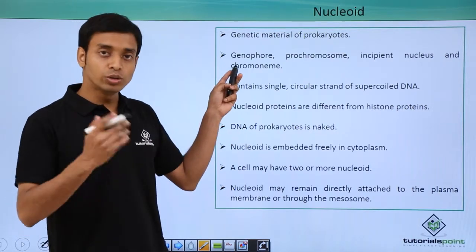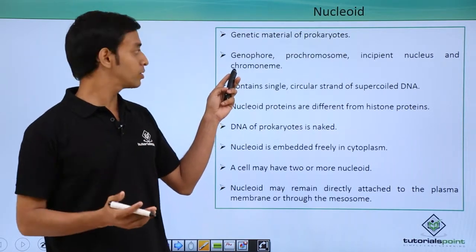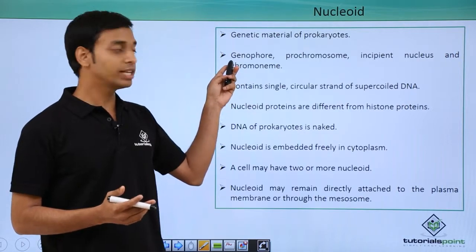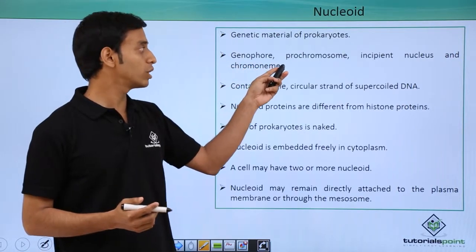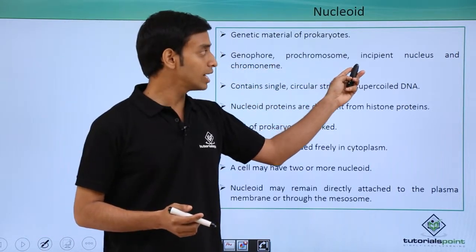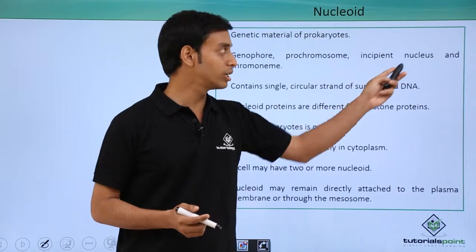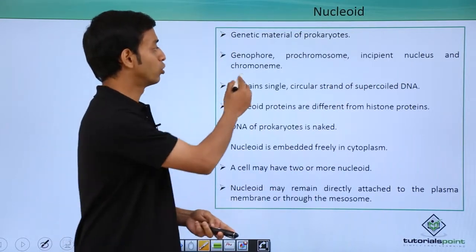Nucleoid is known by different names. For example, they are known as genophores; they are also called as prochromosome; they are called as incipient nucleus; and also they are known as chromonym.